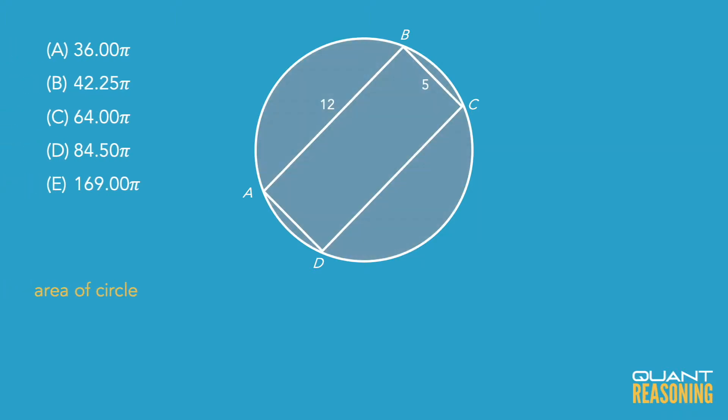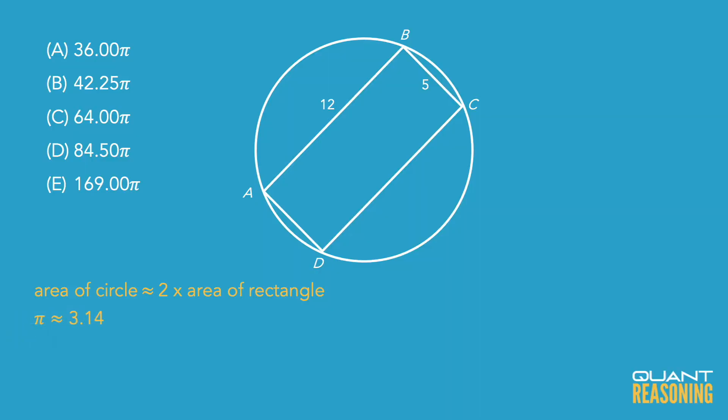So since the diagram appears to be drawn to scale, we can probably eliminate some answer choices just using our eyes. When I look at the circle, it looks like the area of the circle is somewhere around double the area of the rectangle. It's certainly not four or five times as big, and it's certainly not smaller than the rectangle. I know that pi is approximately 3.14, so I can eliminate any answer choices that are way off. In this case, that is answer choices C, D, and E — they are all way too big to have any chance of being correct, and that's a good guessing strategy if you don't know how to actually solve the question.